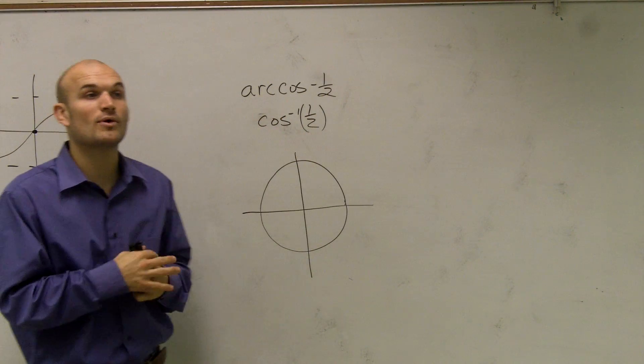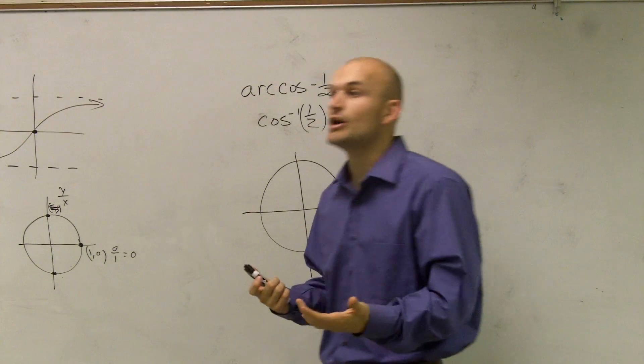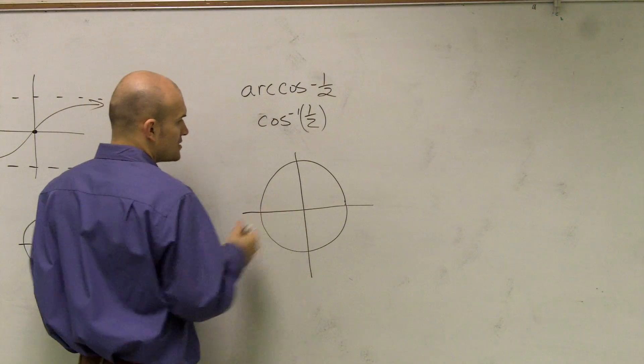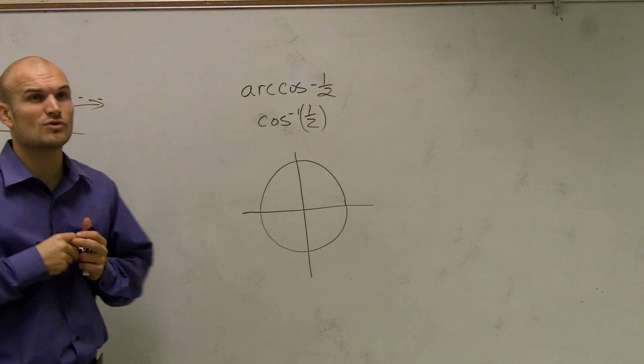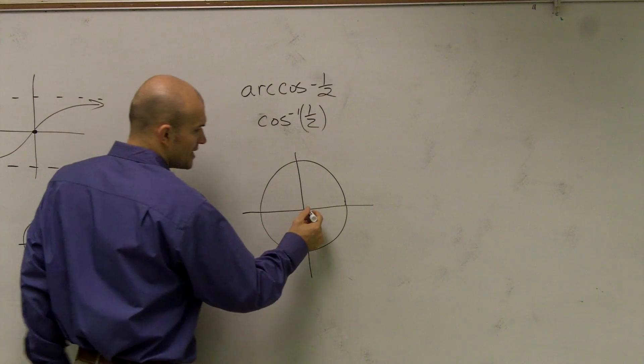So what we need to do is I know that 1 half is going to be on our unit circle. So what I'm going to do is use our unit circle to help me find my inverse cosine, or the angle of my points. So first thing, I need to determine where is cosine equal to 1 half, right? Well, there's two points that I know of.